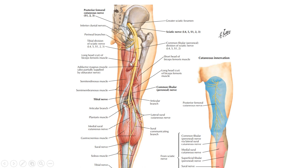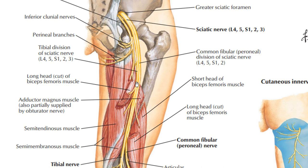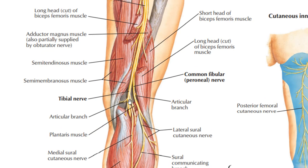Looking at the posterior aspect of the whole leg, the sciatic nerve comes through the greater sciatic foramen and at the upper apex of the popliteal fossa divides into the tibial nerve and common peroneal nerve. The tibial nerve gives articular branches to the knee joint, and the common peroneal nerve also gives articular branches to the knee joint.